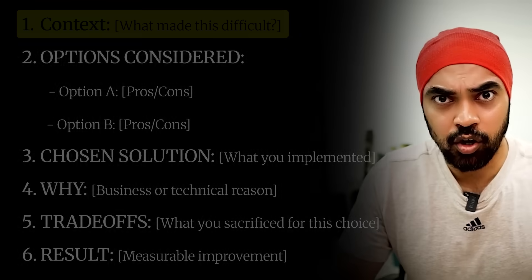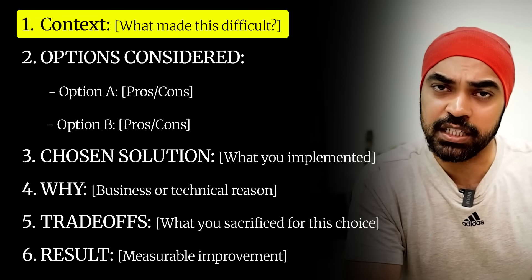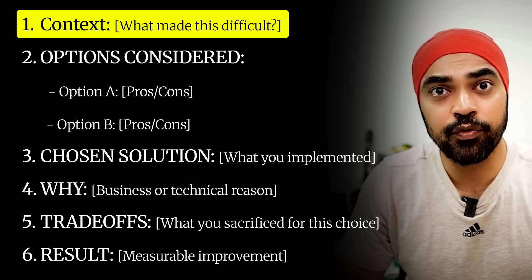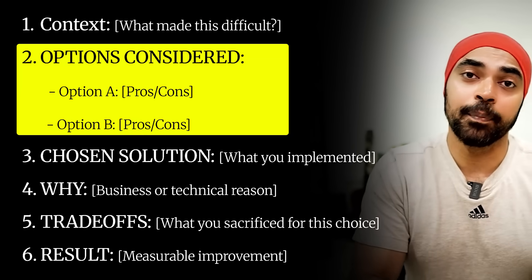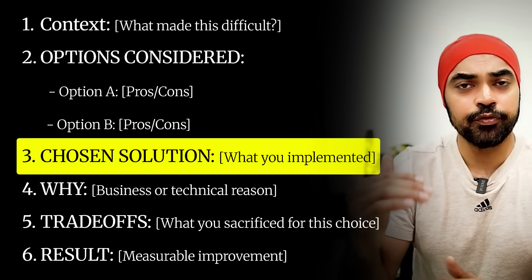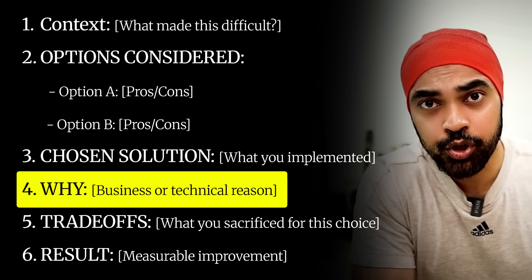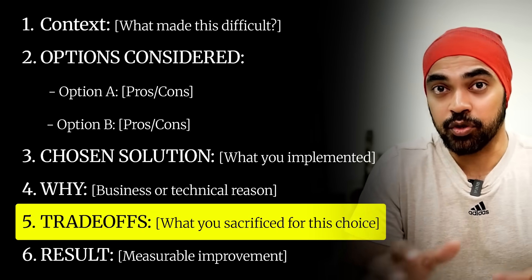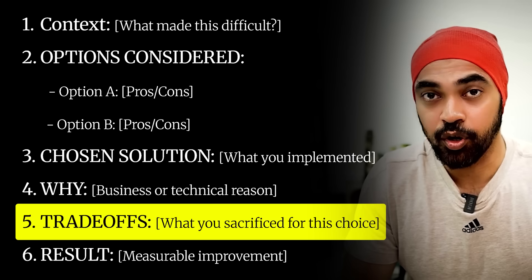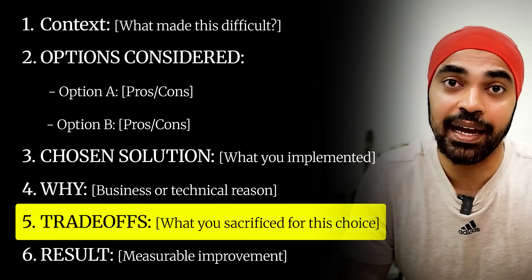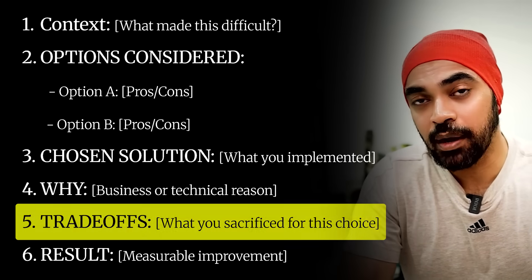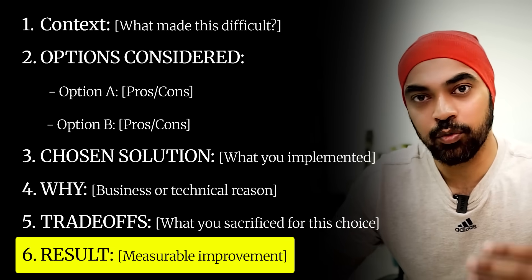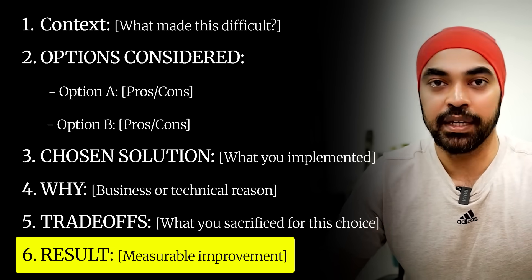Here is the framework to follow for talking about your architectural design process: first, give the context of the business problem you were solving. Second, discuss the options you considered — what were the three or four alternatives, why did you choose a particular solution, and what trade-offs did you make. The things you chose to give away and the things you chose to keep are a vital part of the decision-making process that highlights your technical ability. Finally, talk about the result — how did the solution improve the dashboard or business.